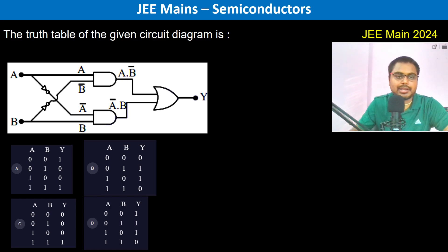The truth table of the given circuit diagram is - so this is A, this is B naught, this is A naught, this is B, and this is an AND gate, this is also an AND gate. So therefore this is A dot B bar, and so basically we have A, B, then we